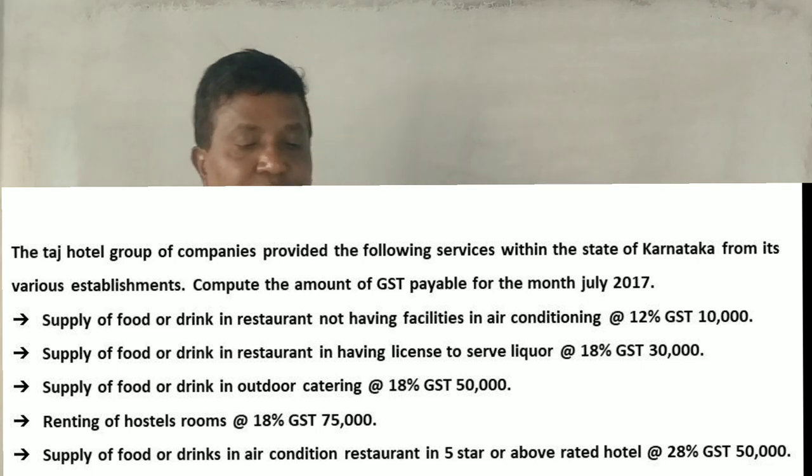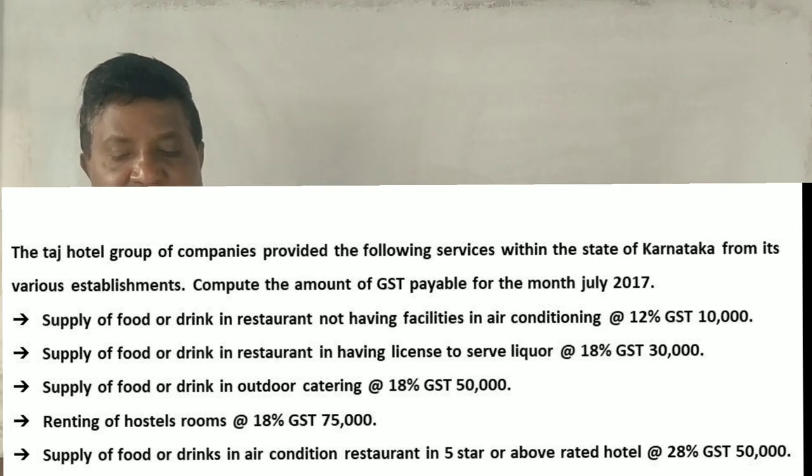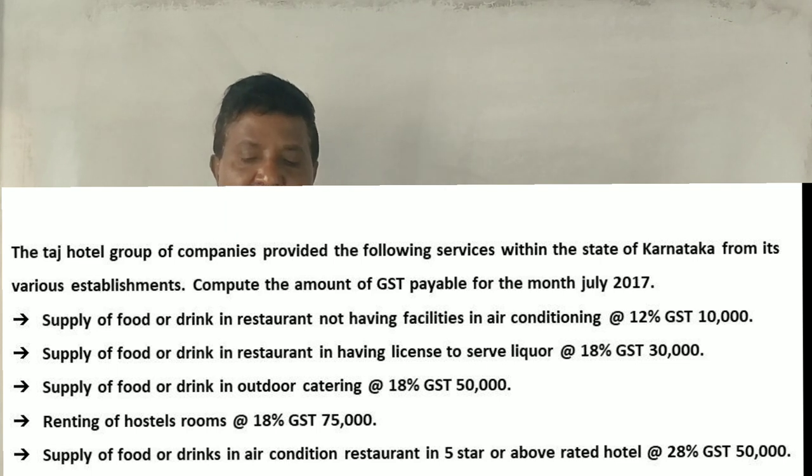One question is the Nodinatra. The Nodinatra, Taj Hotel Group companies provided the following services within the state of Karnataka from its various establishments. Compute the amount of GST payable from the month July 2017.